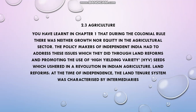We have learnt in chapter 1 that during the colonial rule there was neither growth nor equity in the agricultural sector. The policy makers of independent India had to address these issues, which they did through land reforms and promoting the use of high yielding variety seeds, which brought a revolution in Indian agriculture — the green revolution.